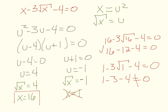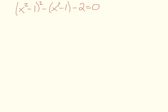Always keep an eye out for extraneous solutions, especially when dealing with square roots. For the last example, we have an equation with a compound expression. The whole quantity (x squared minus 1) is being squared in the first term, raised to the first power in the second, and absent in the third term. So this is still quadratic form, and we could potentially have four answers.